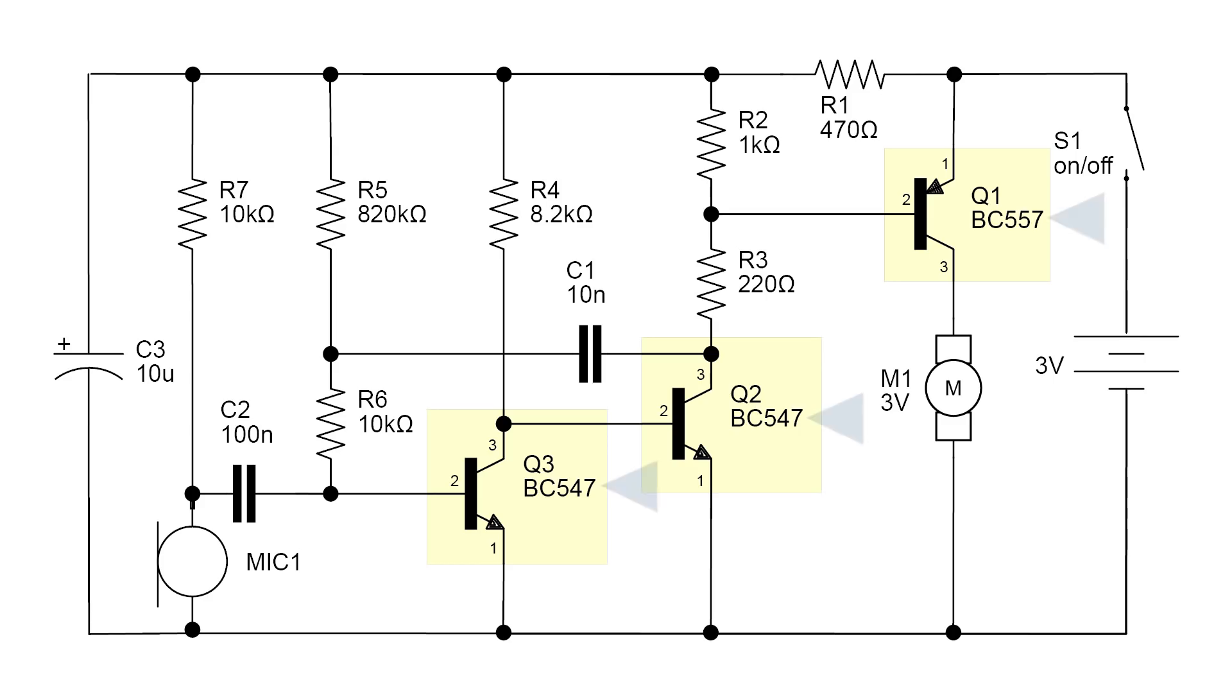The transistors are also labeled with the part number. Note that Q1 is a PNP transistor, while both Q2 and Q3 are NPNs. You can tell by looking at the emitter and seeing whether the arrow is pointing in or out.